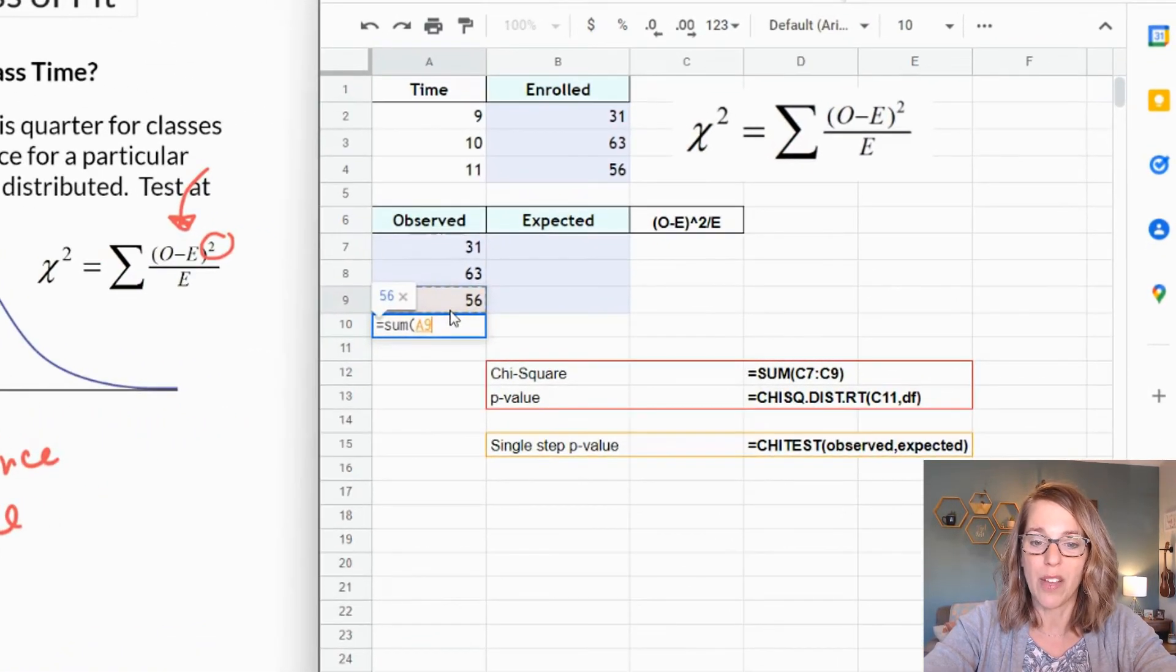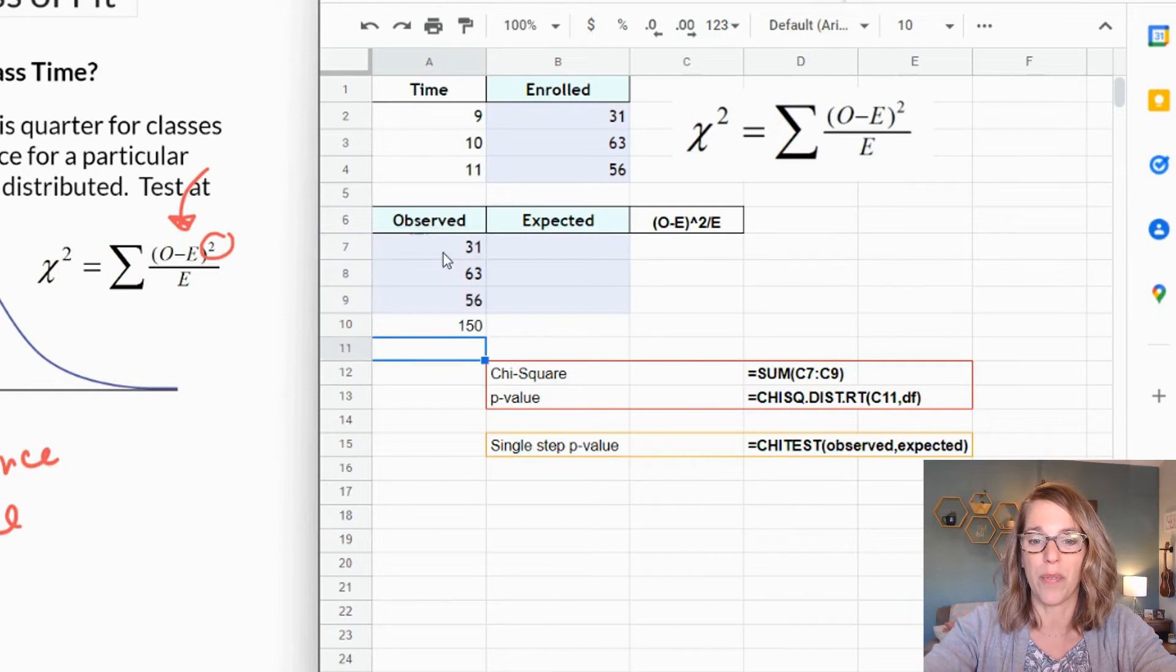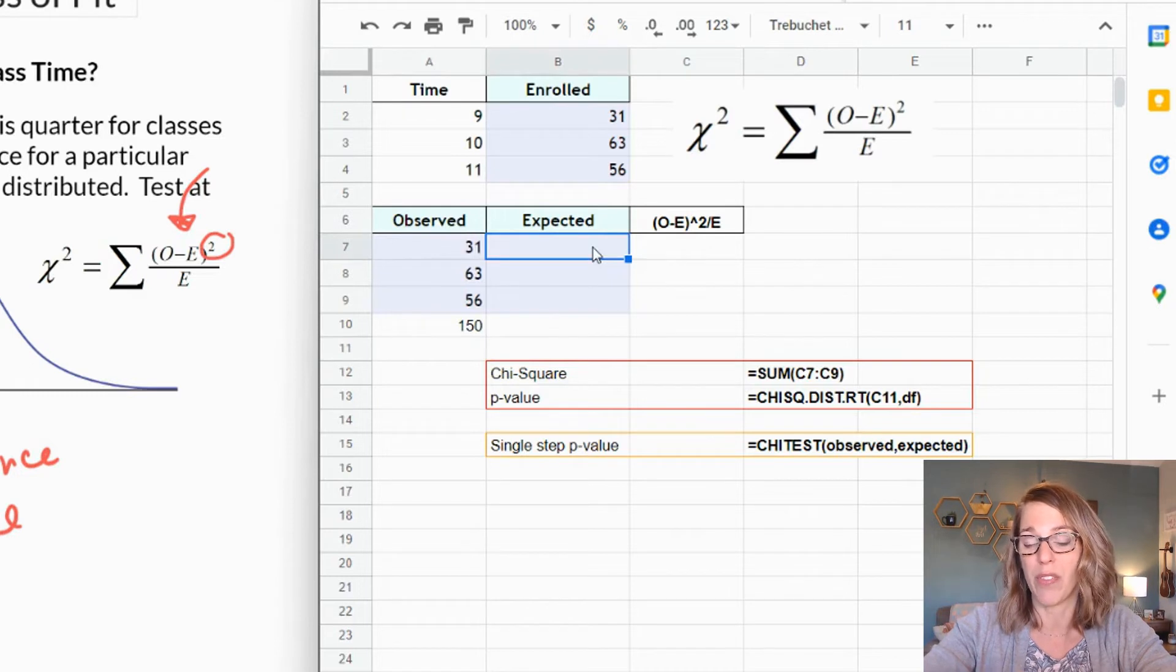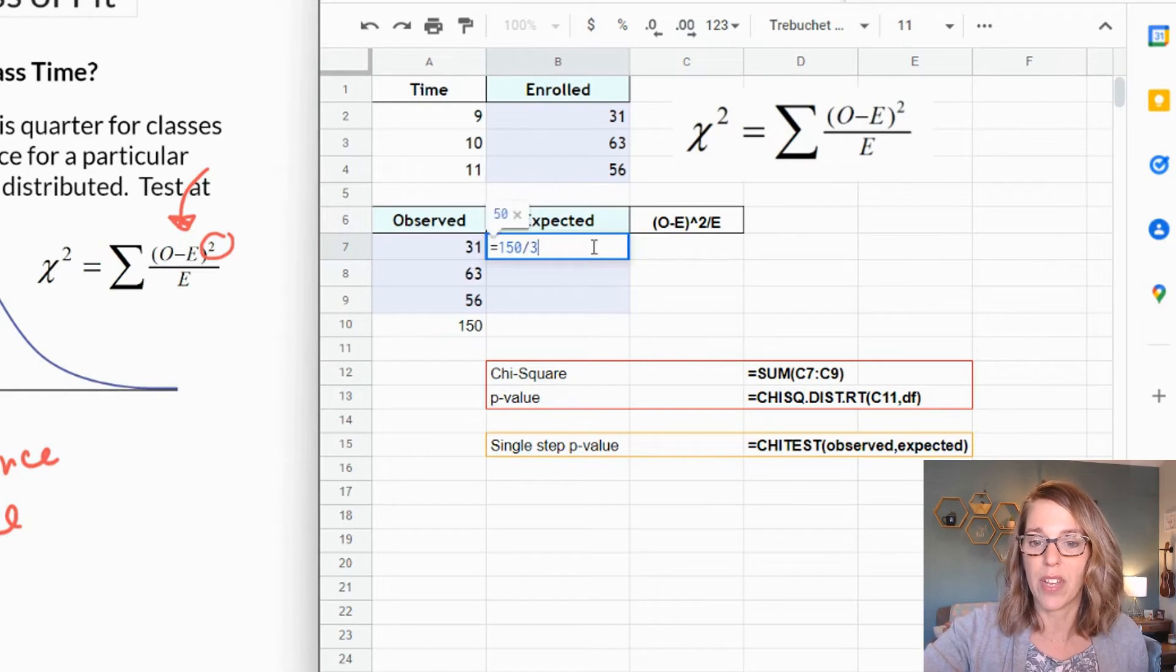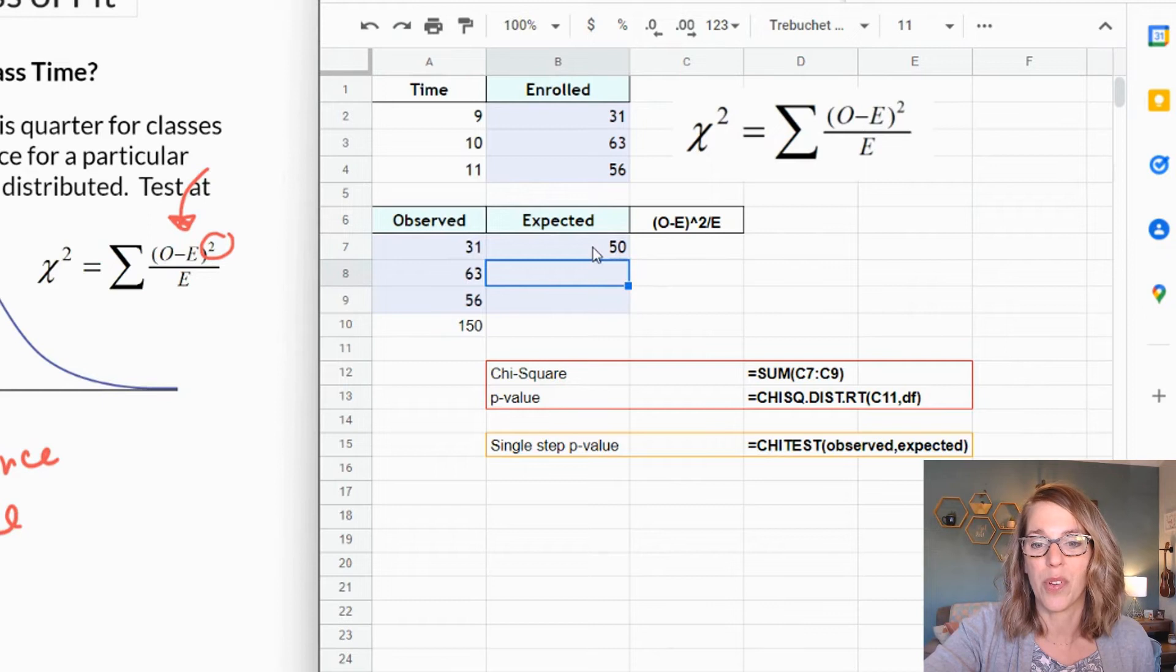But if it doesn't work out quite that nicely with your data, you can go ahead and add up your data here. I'm just going to write equals SUM. I'm going to put a parenthesis and then I am clicking, dragging and holding over my data and I get 150. And I want to go ahead and do 150 divided by 3, so I type equals 150 divided by 3 and then enter.